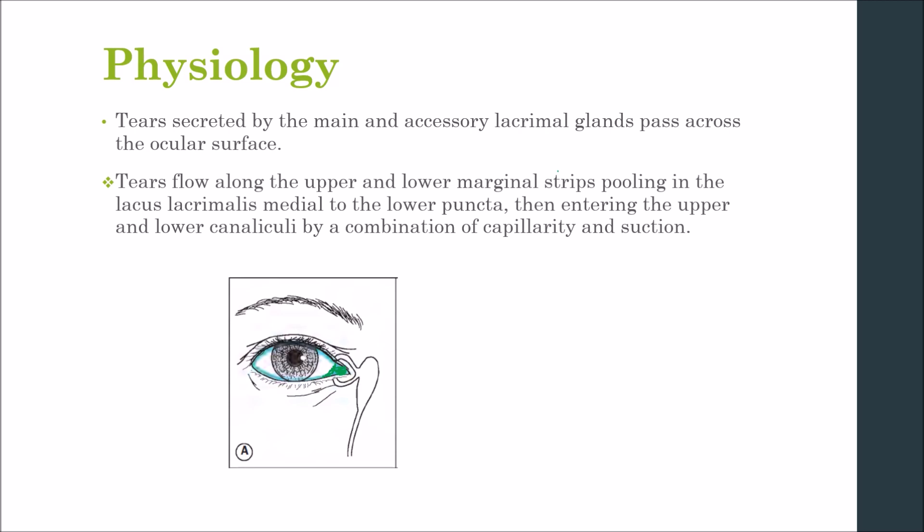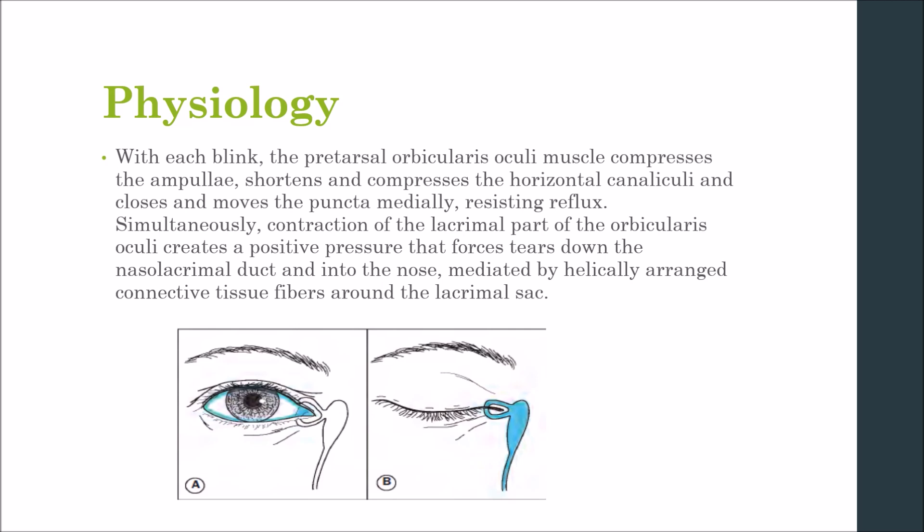With each blink, the pre-tarsal orbicularis oculi muscle compresses the ampullae, shortens and compresses the horizontal canaliculi, and closes and moves the puncta medially, resisting reflux. Simultaneously, contraction of the lacrimal part of the orbicularis oculi creates a positive pressure that forces tears down into the nasolacrimal duct and into the nose, mediated by helically arranged connective tissue around the lacrimal sac.